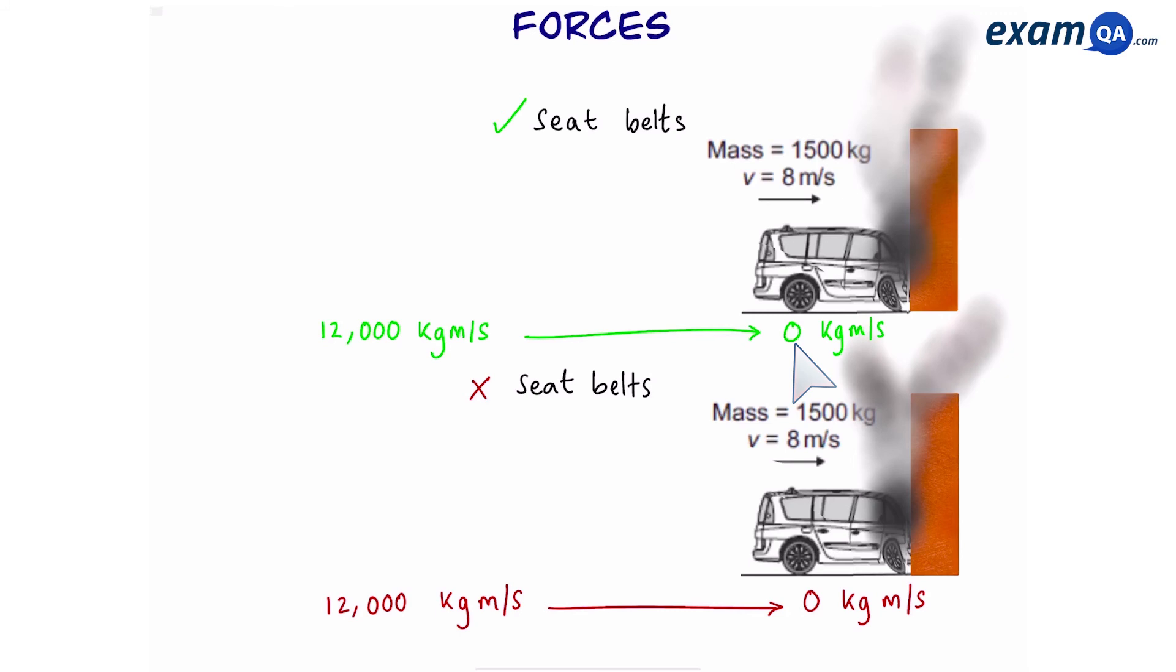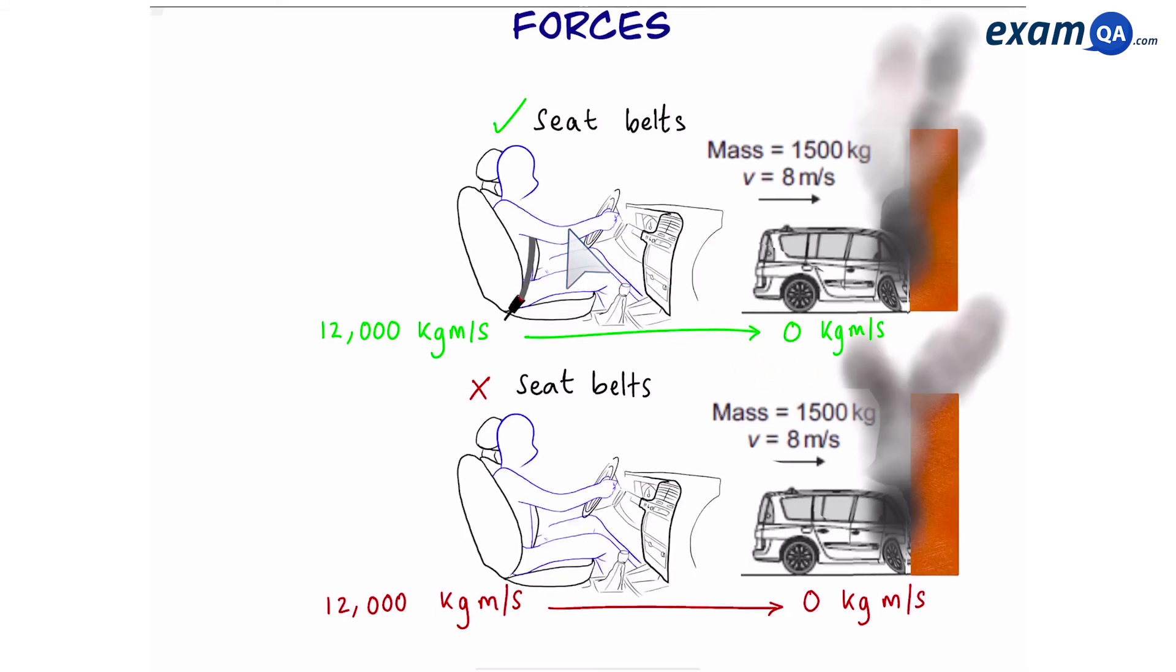To understand the effect of seatbelts, we're going to have to look inside the car and see what happens. So here we have the two drivers. The top driver is wearing their seatbelt, but the bottom driver is not wearing one. So let's see what happens to the bottom driver. The person without the seatbelt is going to quickly smash into the airbags.